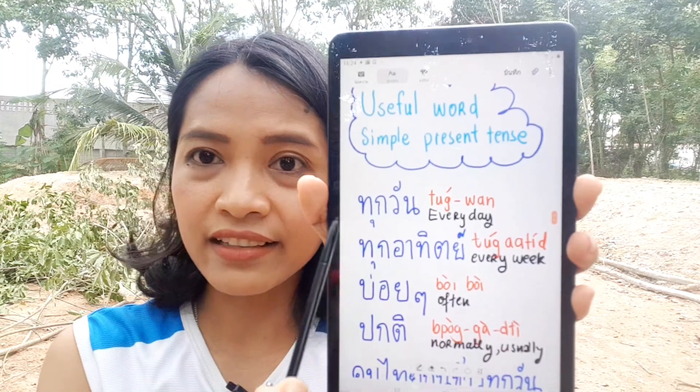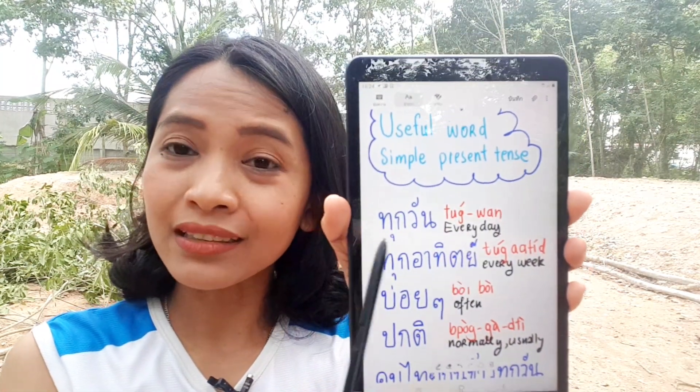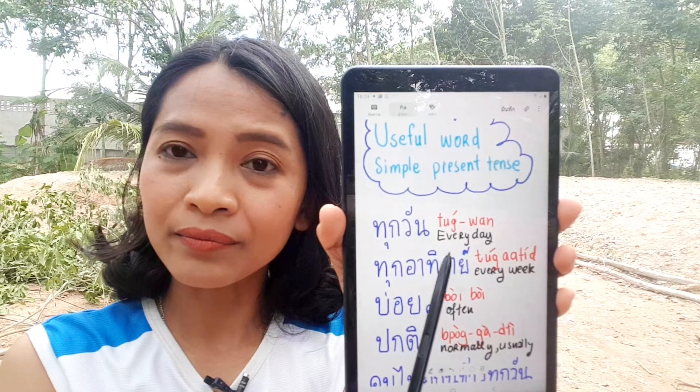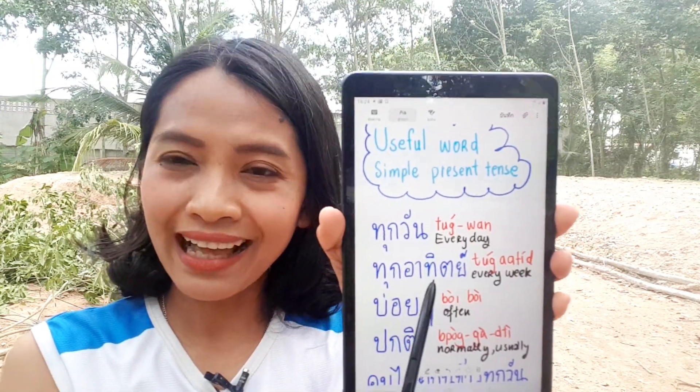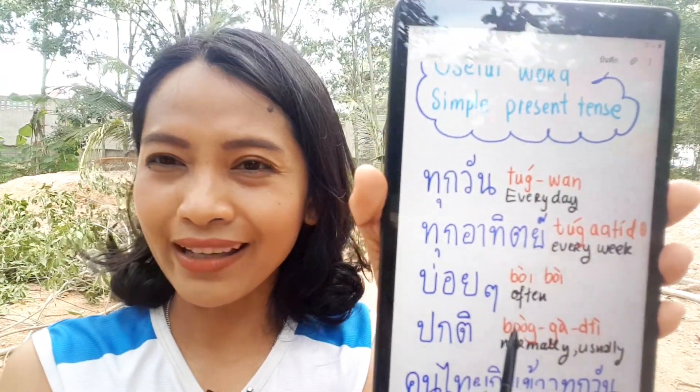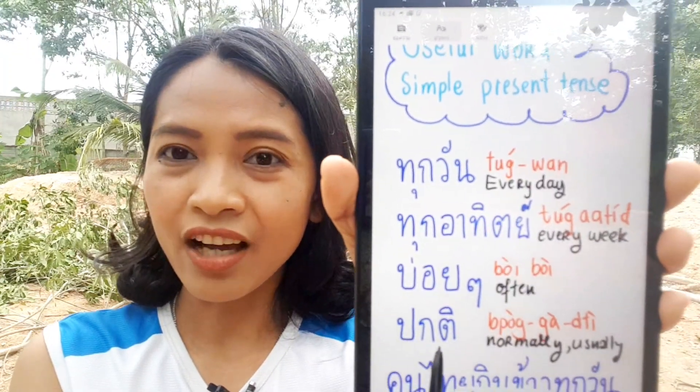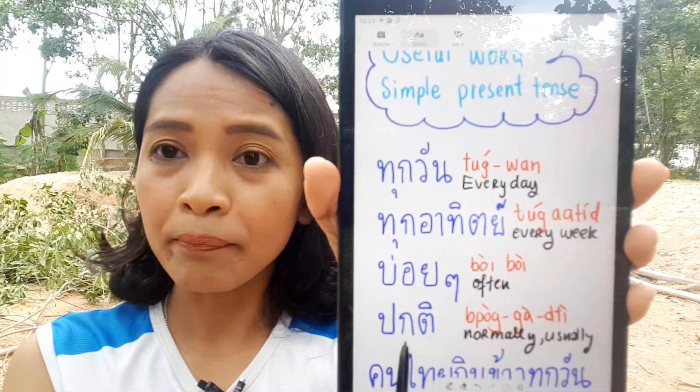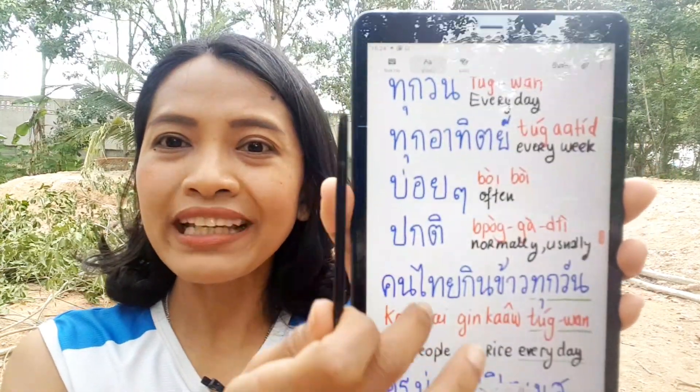There are words you can use to indicate present tense, like words for 'every day,' 'every week,' 'often,' or 'usually/normally.' These are useful time expression words for the present tense. Every day is took wan, every week is took a-tit, often is boi boi, and normally or usually is pakati.